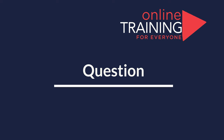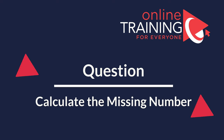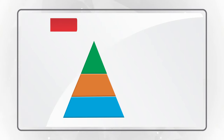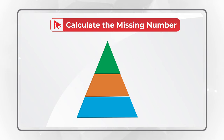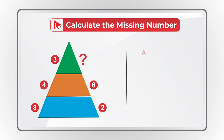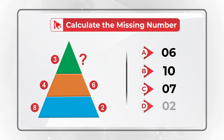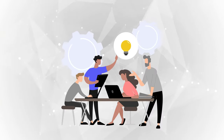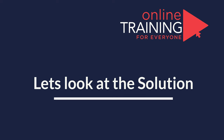Here's an amazing question to test your analytical skills. You need to calculate the missing number. You're presented with a triangle which is split into three equal or almost equal parts. At the bottom of the triangle on each side, you see numbers 8 and 2. In the middle section, you see numbers 4 and 6. At the top of the triangle, you see number 3 on the left, and on the right you need to calculate the missing number. You have four choices: A is 6, B is 10, C is 7, and D is 2. You need not to guess the number but to calculate it.